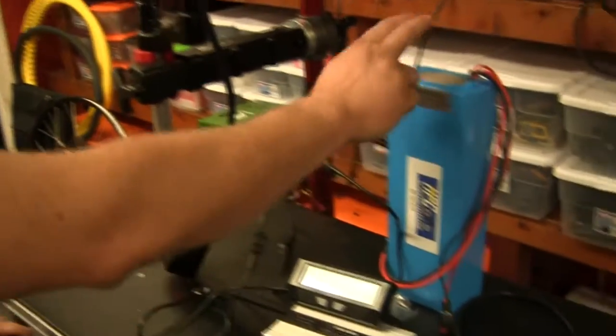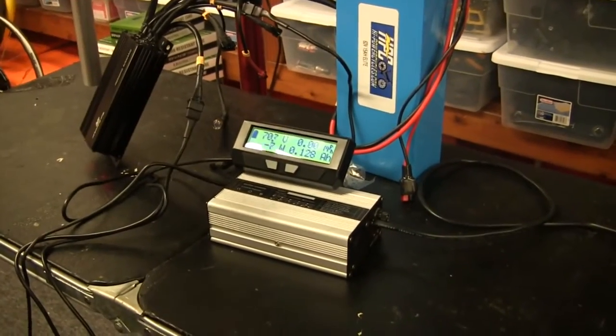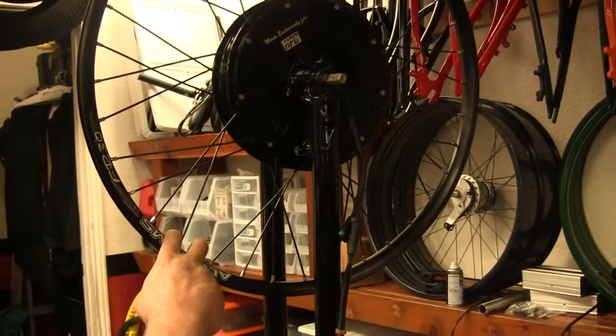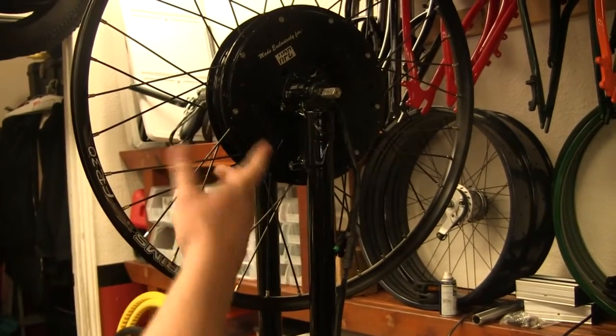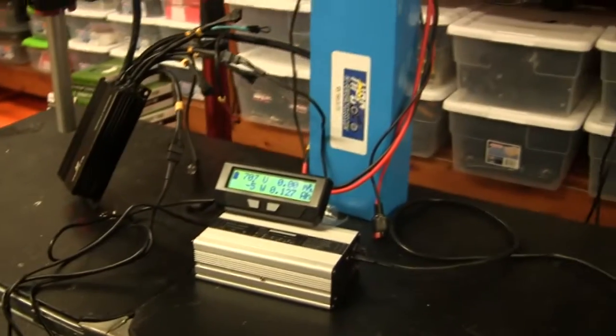All right, so we're running 63 volt battery. We've got 70.7 volts. We're going to do a 3000 watt test through this motor. This is the 5000 watt 40 millimeter Thunderbolt motor. Let's see what the top speed is on this guy at 3000 watts.